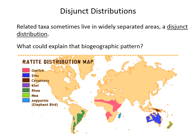Let's use a modern example to illustrate one of these puzzles. The ratite birds, which are like ostriches and their relatives, have this odd biogeographic distribution with different species occurring on widely separated continents — the ostrich in Africa, the emu in Australia, and so forth. Those types of separated occurrences are called a disjunct distribution.